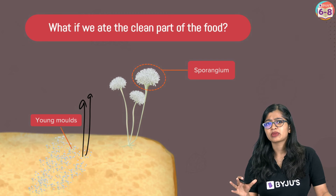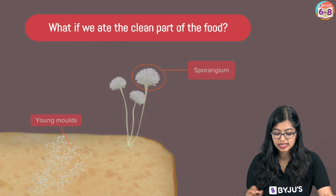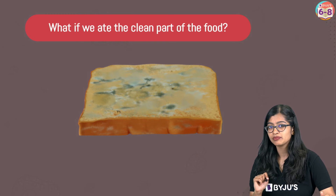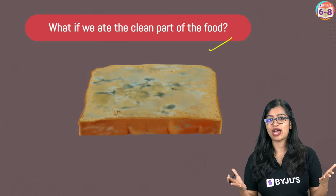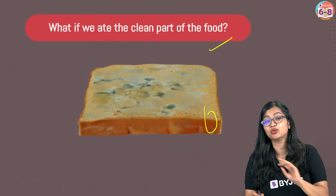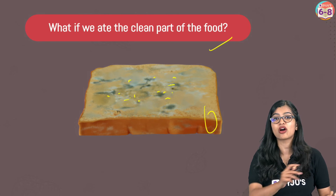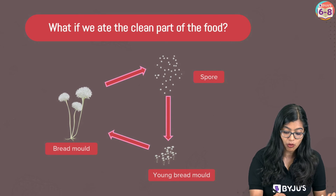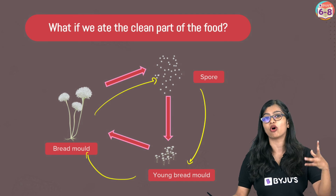So effectively if we had left that slice of bread as it is for some time, we would see that in a few days it would look completely covered. So is it actually safe to consume the clean parts of bread? No. Because the microbe growing on the edges means the whole bread cannot be consumed at all — spores or younger organisms would be present even in the clean-looking part and may get ingested. Bread mold produces spores, spores produce young molds, and young molds further grow into mature ones.